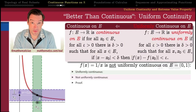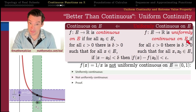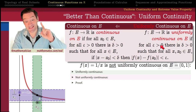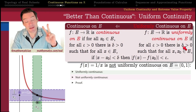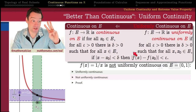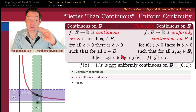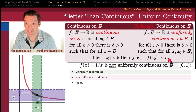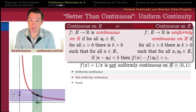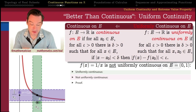The definition of uniformly continuous is triply quantified. A function is uniformly continuous on the domain E if: for all epsilon greater than 0 (first quantifier), there exists a delta greater than 0 (second quantifier), such that for all points x and x₀ in the domain (third quantifier), there's a conditional: if x and x₀ are delta-close to one another, then their images are epsilon-close. Working through an example carefully and slowly is really the best way to understand how to use a definition like this one.